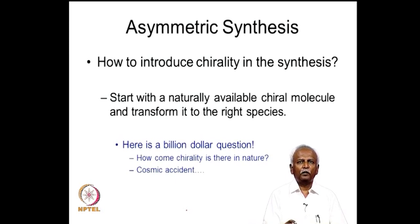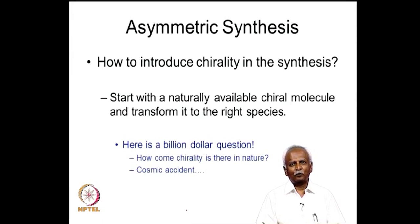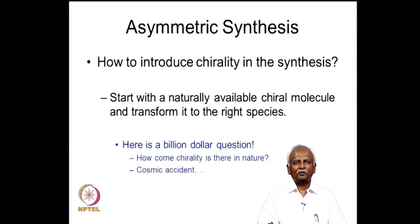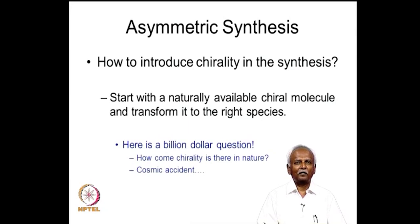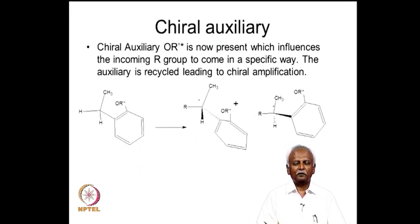Obviously, the best way is to introduce chirality in the synthesis, and very often the answer turns out to be logically circular: you say 'how do you introduce chirality in the molecule you want to synthesize?' and the answer is you start with a chiral molecule which is already available. You have to have a chiral molecule in order to make a chiral molecule, raising the billion-dollar question of how chirality came into nature — the answer sometimes given in textbooks is that it is a cosmic accident. We leave it here as it is more of a philosophical question.